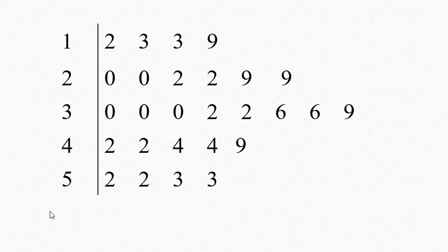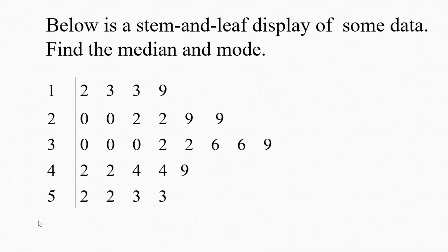We're going to start by finding the mode. And remember, mode means the data value that occurs the most frequently. If you look through all the digits on the leaves, wherever you see a repeated digit, that means that a particular data value is occurring more than once.